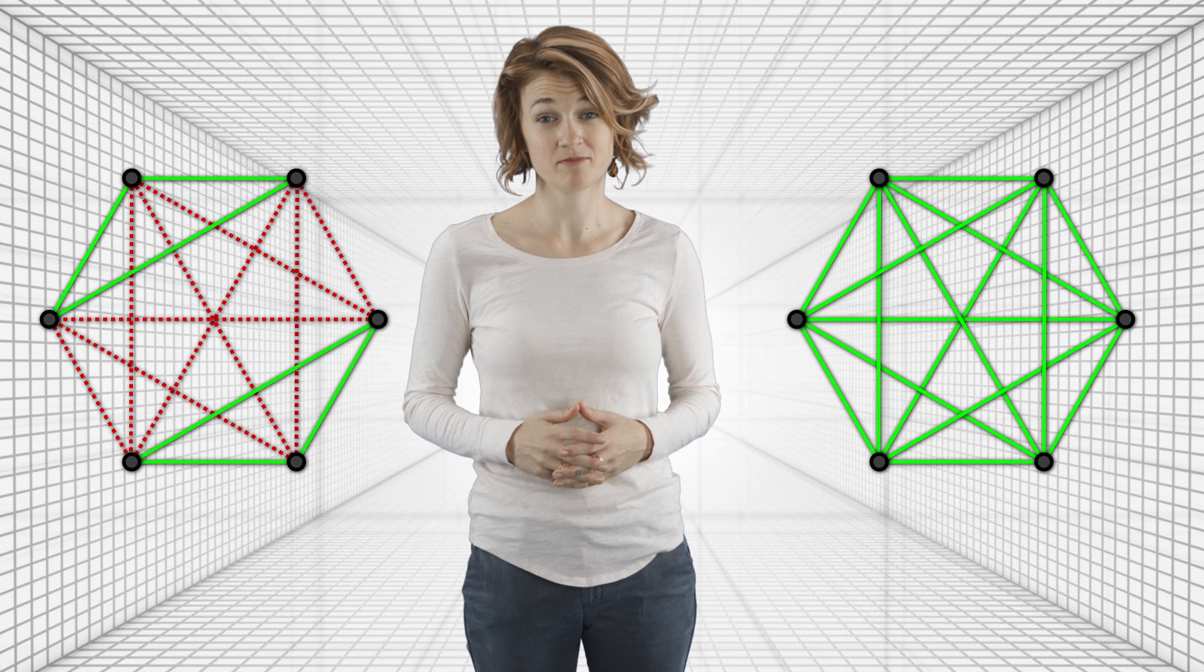Another way a graph can be balanced is if it splits into two rival factions. All these vertices are friends with each other, and all these vertices are friends with each other. But any two vertices in opposite groups are enemies. From a social perspective, the fact that a network is balanced isn't necessarily a good thing. It's closer to a stalemate than a state of harmony.